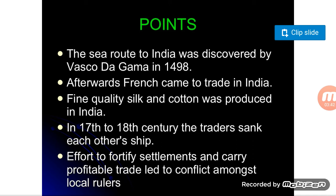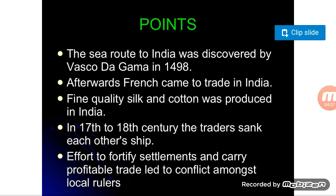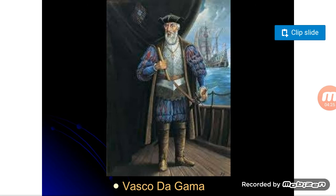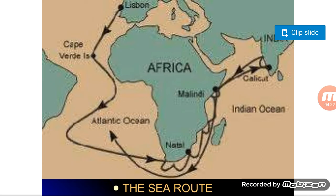The effort to fortify settlements and carry profitable trade led to conflict amongst local rulers. Those local rulers wanted to fortify the settlements — as studied in the previous class with garrison towns and fortifications. This was the main reason for conflict. You can see the image of Vasco da Gama and the sea route to India, which you may have studied in Class 5.